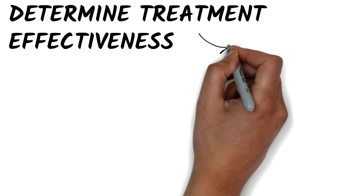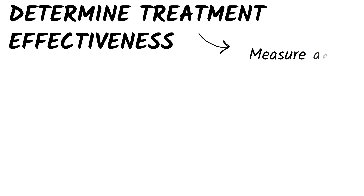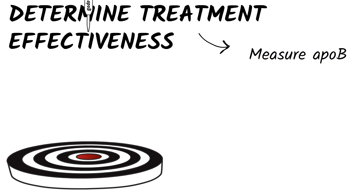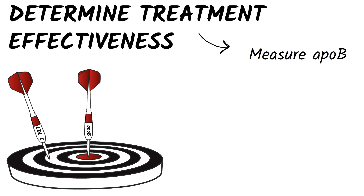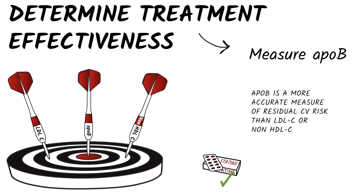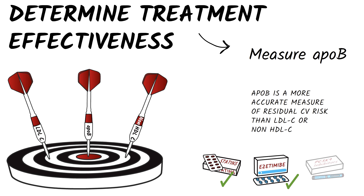Given these three forms of treatment, how do you judge the effectiveness of the course you've chosen? You measure ApoB to assess your patient's response to therapy. The reason for this is that ApoB can be measured more accurately than LDL-C or non-HDL-C, particularly at low levels, and because randomized clinical trials have shown that ApoB is a more accurate measure of residual cardiovascular risk than LDL-C or non-HDL-C. This has been shown for statin treatment, for statin plus ezetimibe treatment, and for combined statin plus PCSK9 inhibitor treatment.